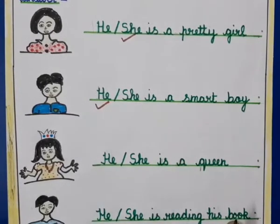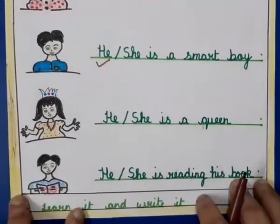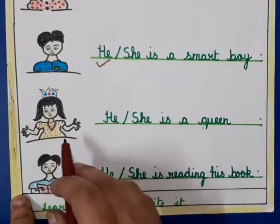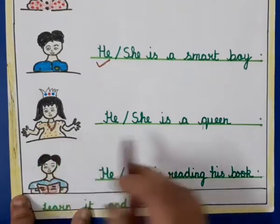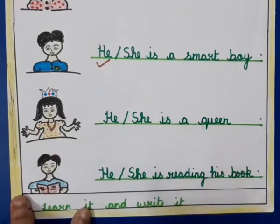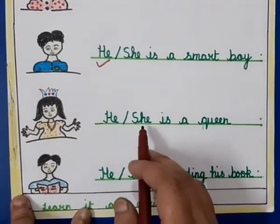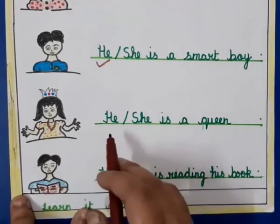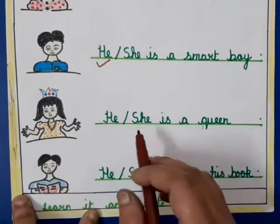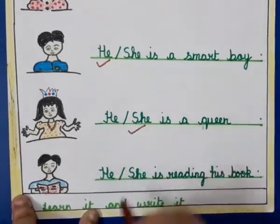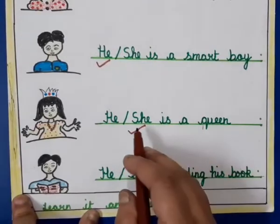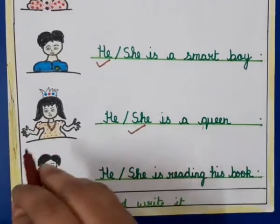The next sentence is about a girl who is a queen. The options are 'he' or 'she is a queen.' We use 'she' for girls, so here we will tick 'she' because she is a queen, and we use 'she' for girls.